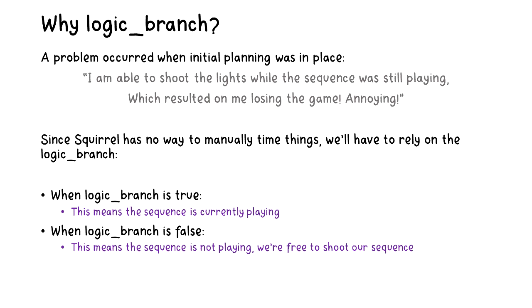While developing this minigame I had an issue. I was still able to hit the lights after it was playing, despite declaring a boolean within the script. The solution to this was to use a logic branch. When the logic branch is true, the sequence is currently playing. If it's false, that means it's not playing, which will allow us to shoot back the sequence and let the program validate if it was the right sequence played back.